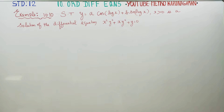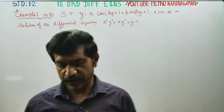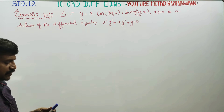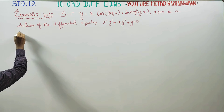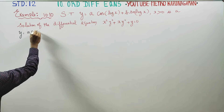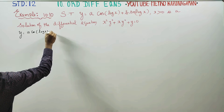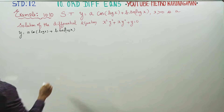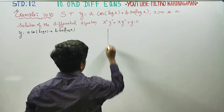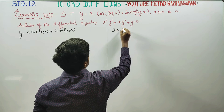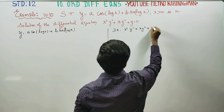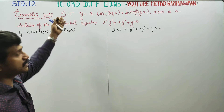Dear 12th standard students, I am Etruh Karnagaran. In ordinary differential equations, example 10.10, you have to show that y = a·cos(log x) + b·sin(log x) is the solution of the differential equation x²y'' + xy' + y = 0. You have to prove this.